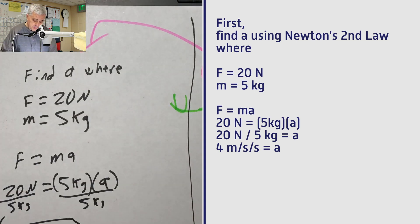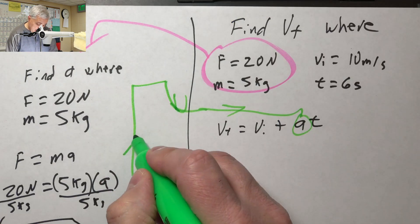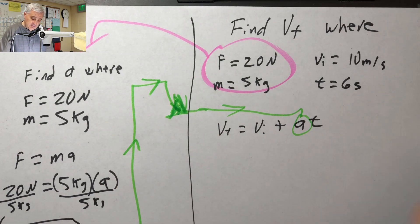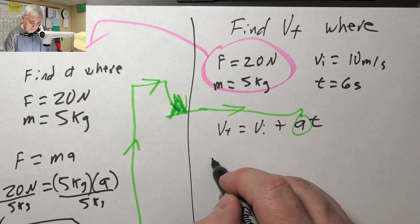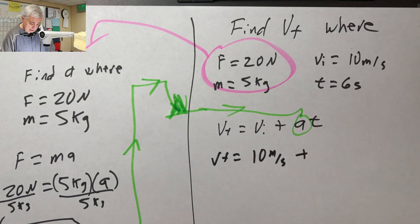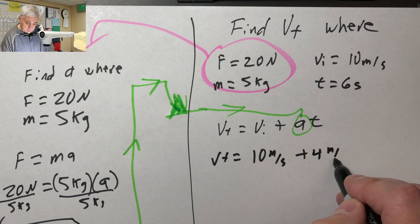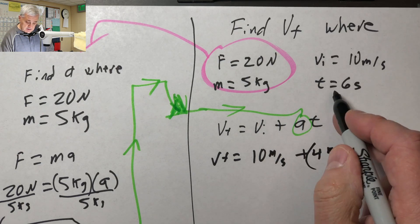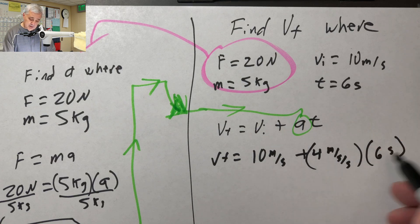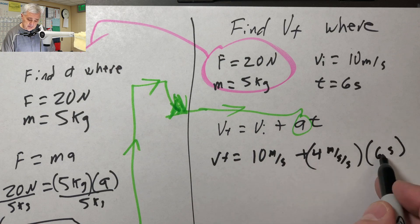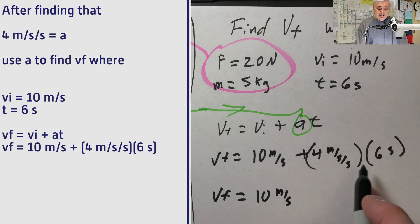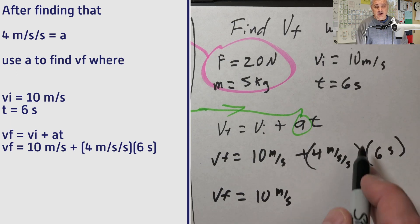So I'm going to take my green pen and go over here. Now I'll take my 4 and stick it in for a. Find v sub f: v sub f equals v sub i, which is 10 meters per second, plus a, which is 4 meters per second squared, times t, which is 6 seconds. Meters per second squared times seconds gives you meters per second. So: 10 meters per second plus 4 times 6.